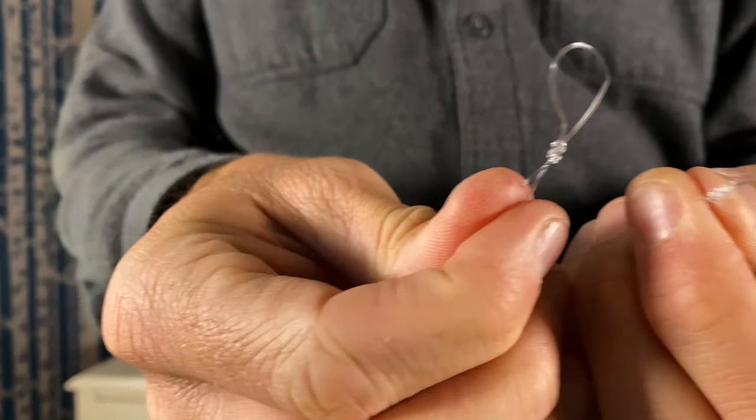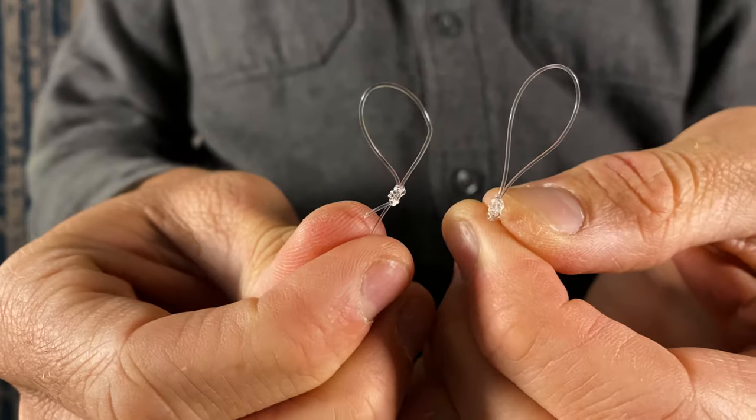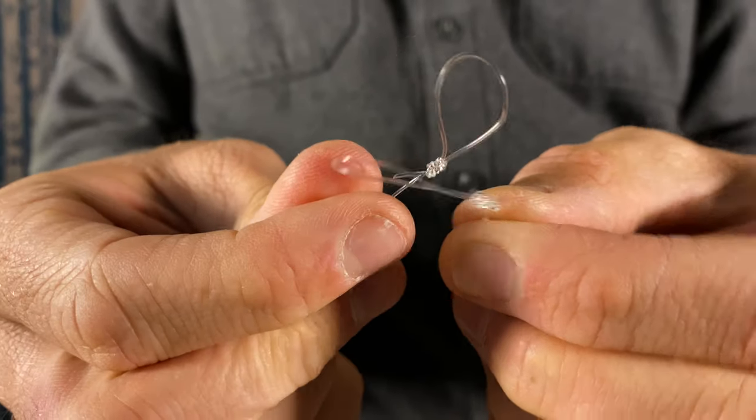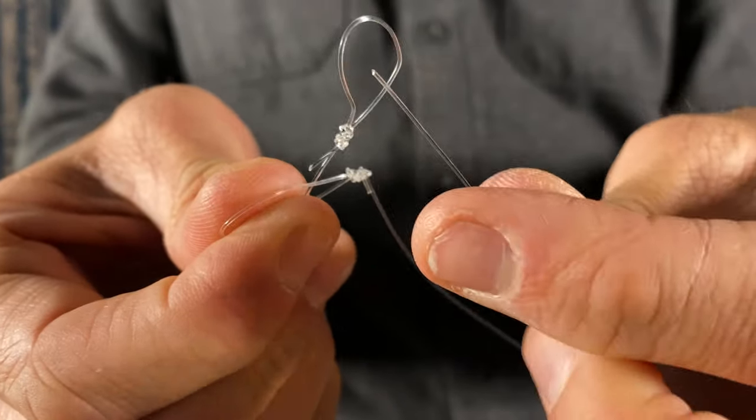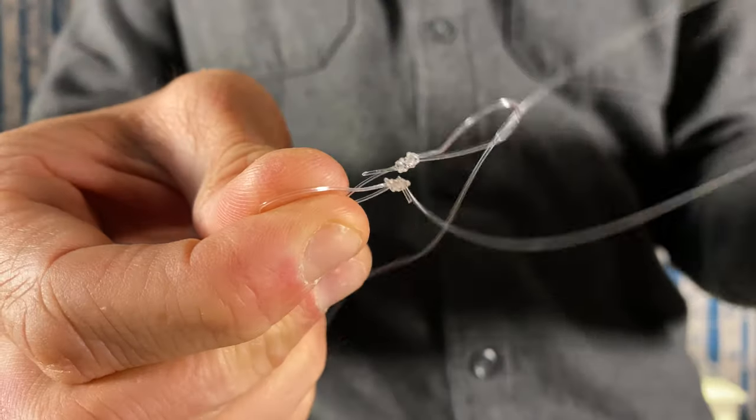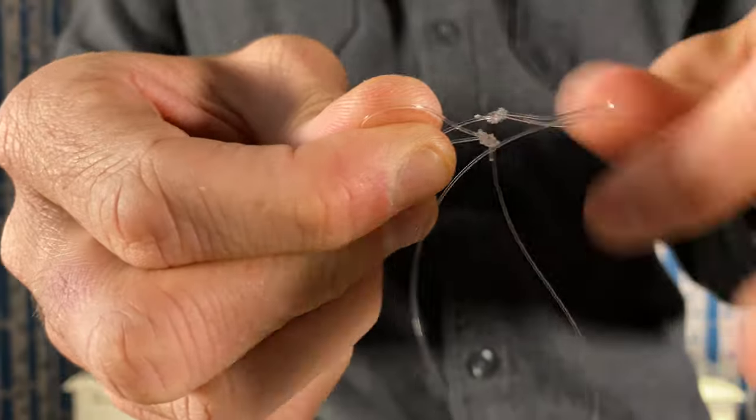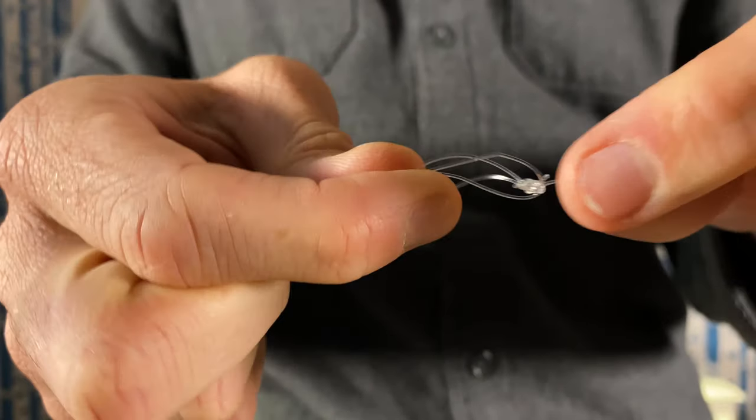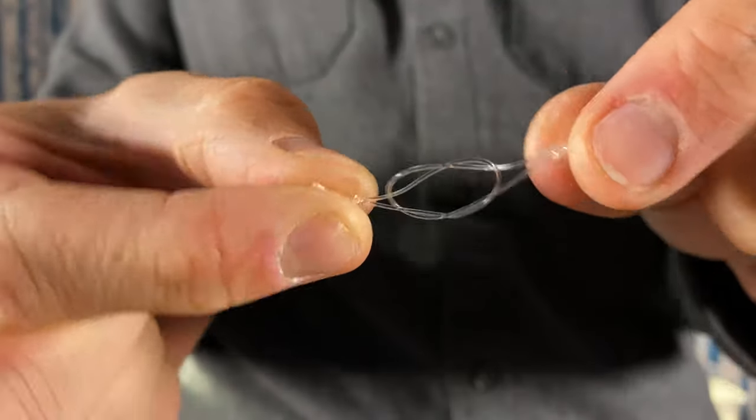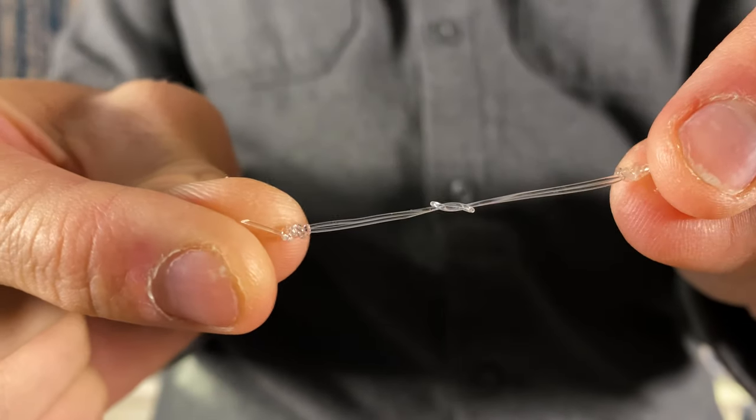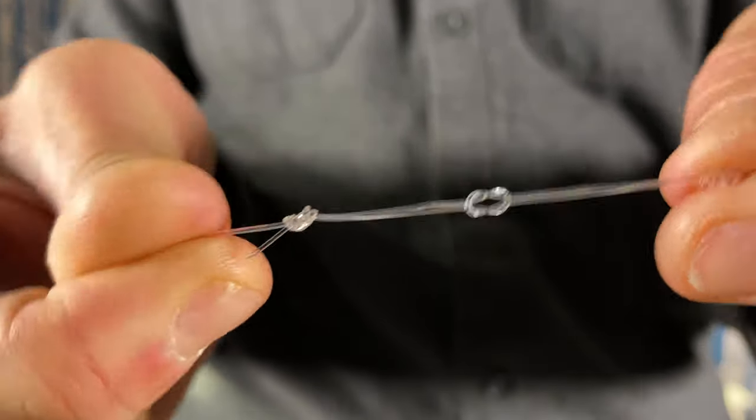Okay, so if I have two loops and I want to make a loop-to-loop connection, I can pass one loop over the other one. I can grab the tip of that line, push it through that loop, and then pull it all tight. It kind of makes a little figure eight here as they connect.